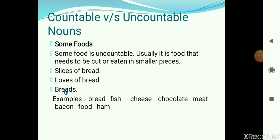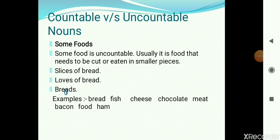Some foods are uncountable — usually food that needs to be cut or eaten in smaller pieces. Some examples are bread, fish, cheese, chocolate, meat, bacon, and ham. For example, bread is uncountable — you can count slices of bread or loaves of bread, not the bread itself. We don't say 'breads' because uncountable nouns don't have plural forms.